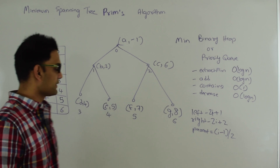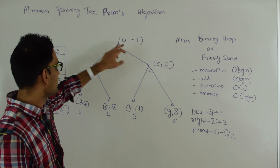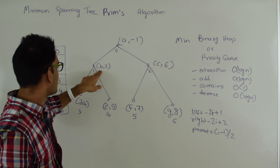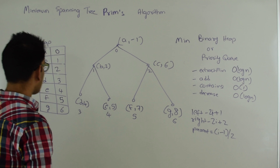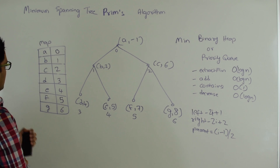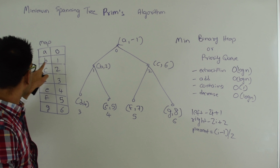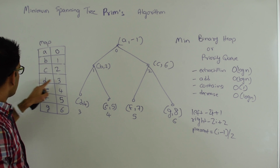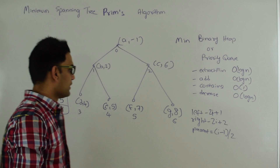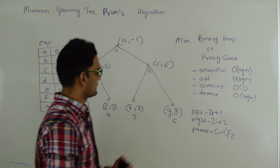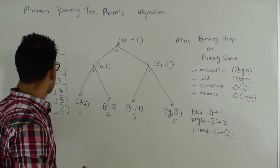Now to support the contains and decrease operations efficiently, we need an additional map data structure. In this map we store the key — every pair in the heap is identified by a unique key — and the value stored in the map is the position of that key in the array. So A is at location 0, B at 1, C at 2, D at 3, E at 4, F at 5, and G at 6. To support the contains operation, we just check whether this map has the key C — and it does — so this can be done in O(1) time.